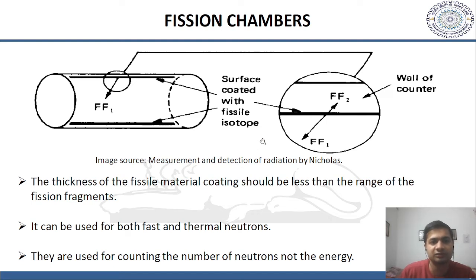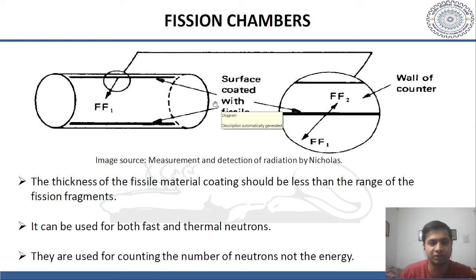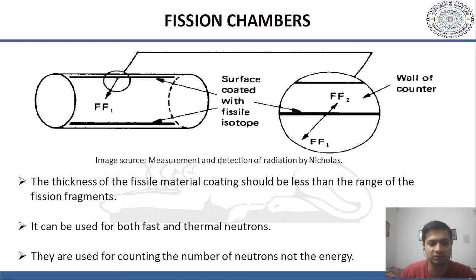Another type is fission chambers. Fission chambers are also gas detectors, but they are operated in the ionization region. The surface is coated with a fissile isotope, and the thickness of the fissile material coating should be less than the range of the fission fragments. They can be used for both fast and thermal neutrons but are used for counting the number of neutrons, not the energy.